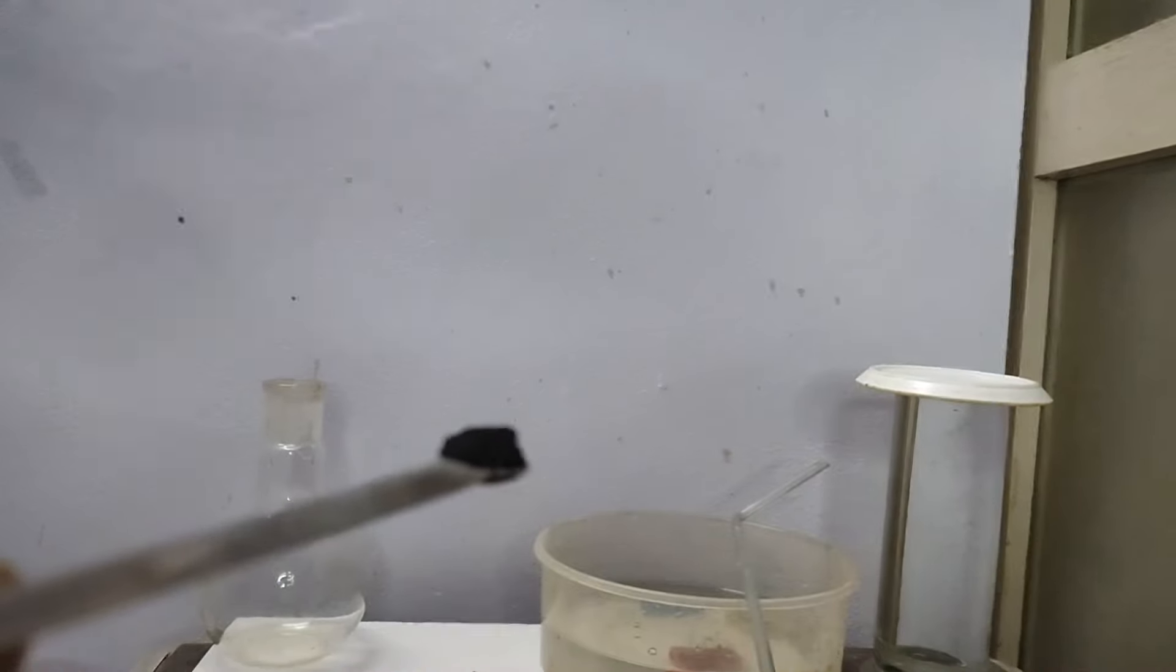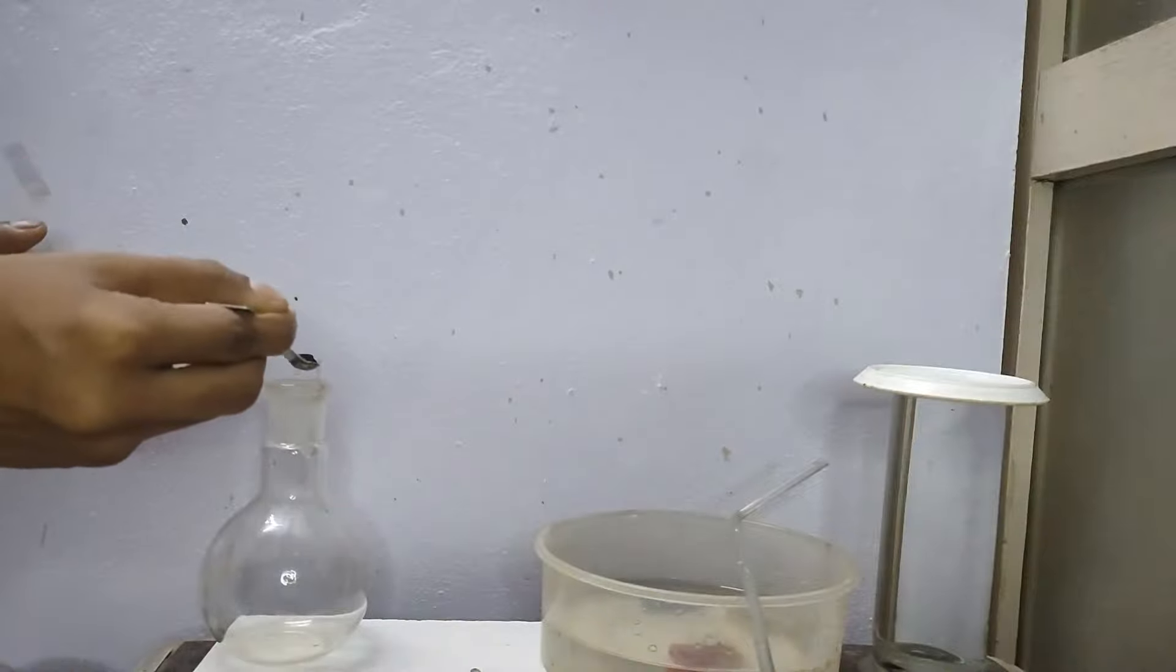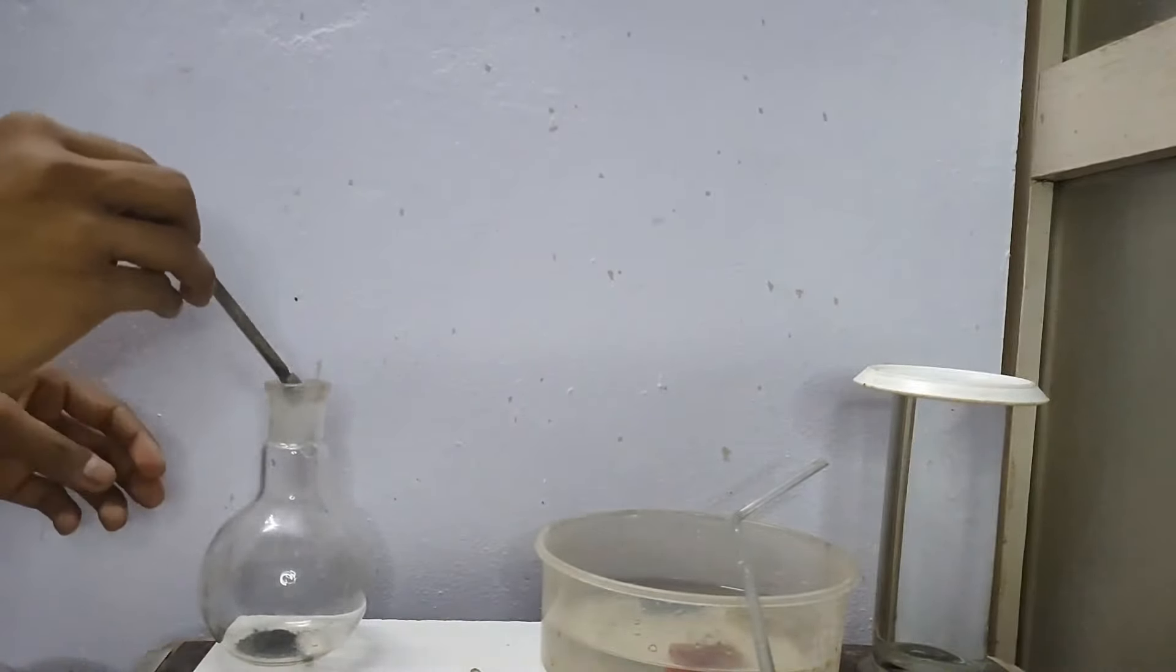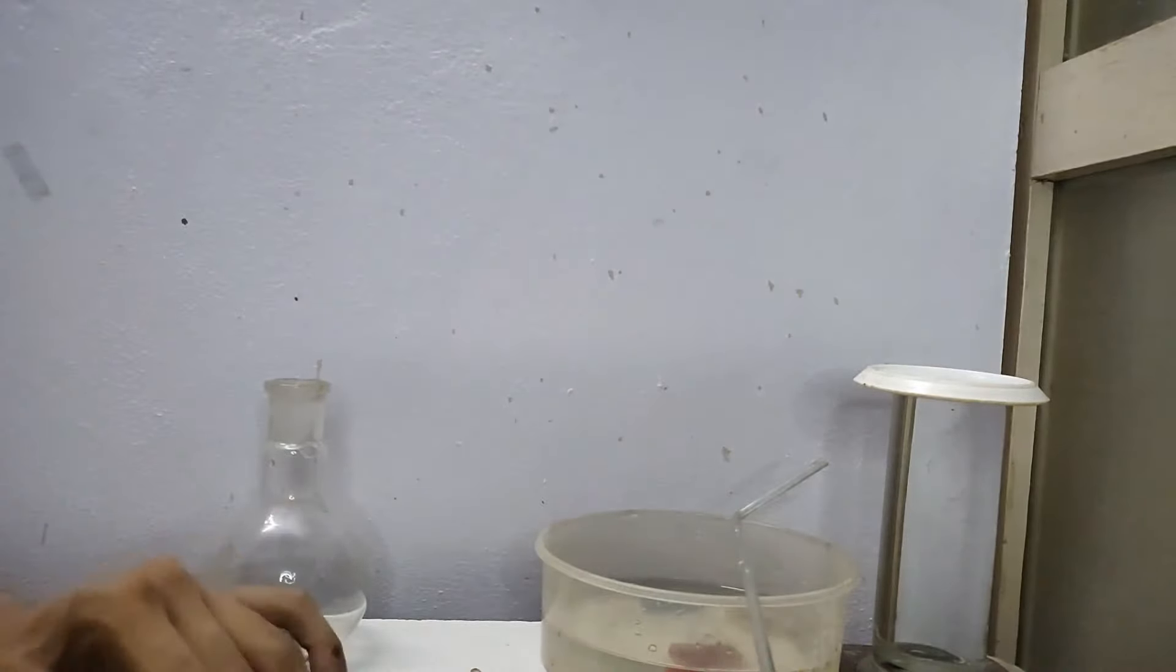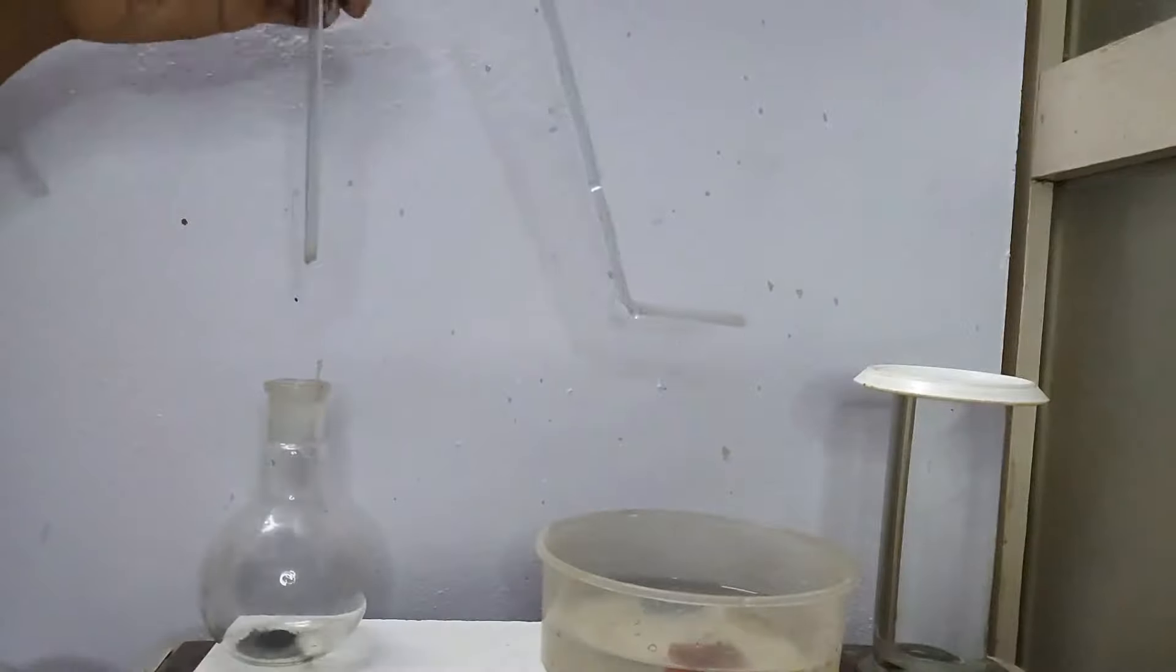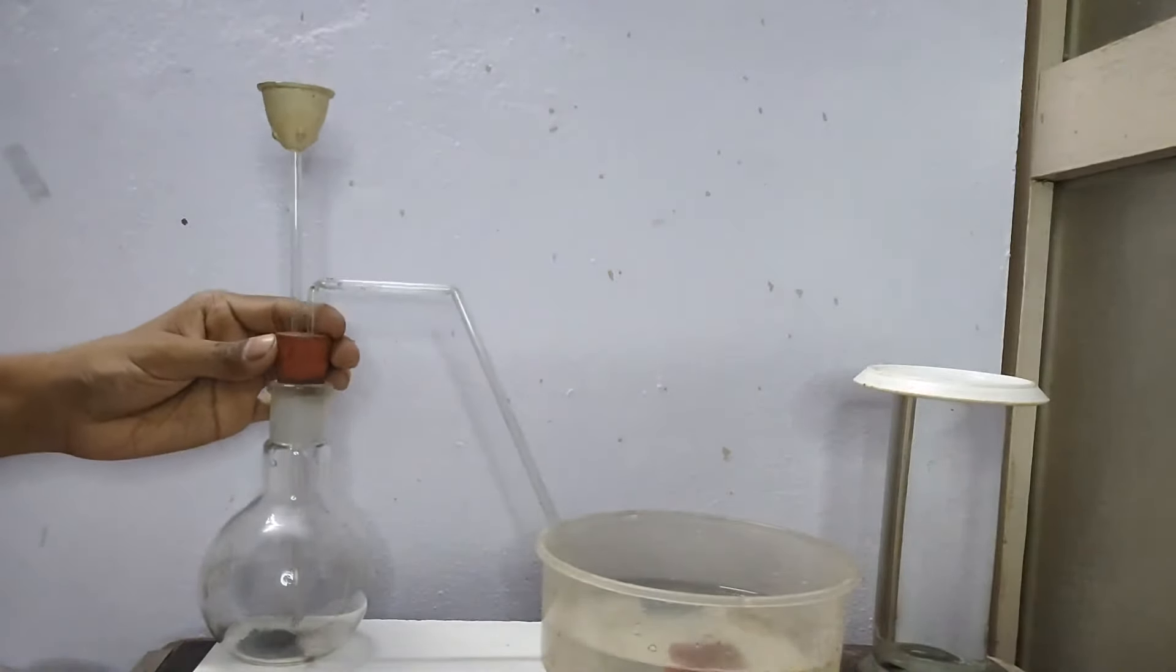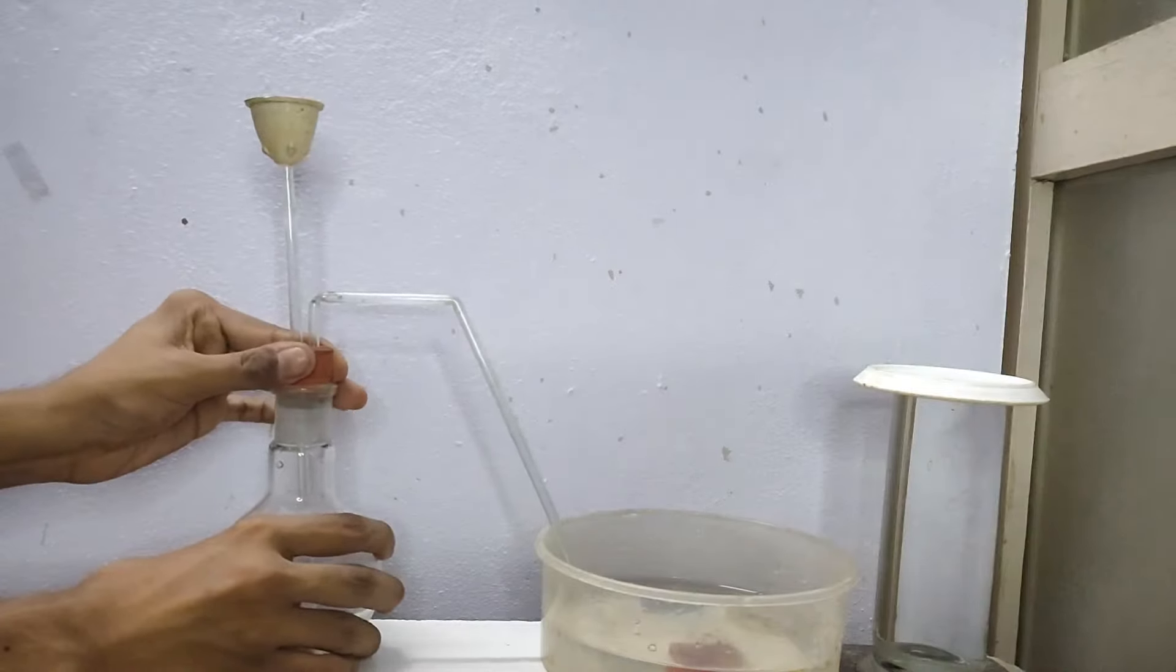And then I will take a spatula of manganese dioxide. You can see that it is a black powder. This will work as our catalyst. It will increase the rate of reaction but will not take part in the reaction. So as much you add, it will not get consumed. So a little quantity also is sufficient to facilitate the reaction.